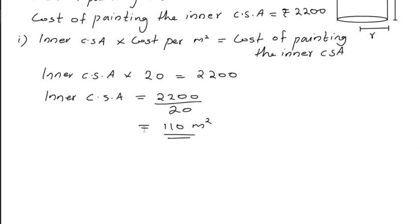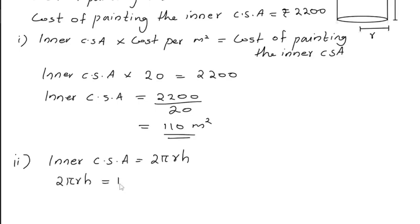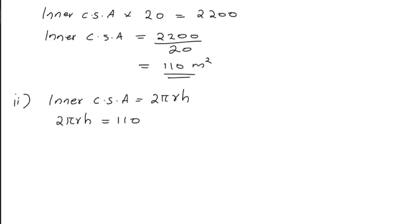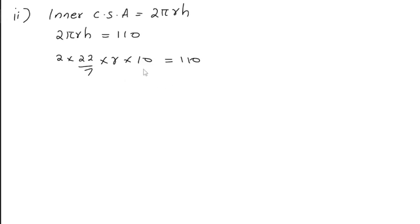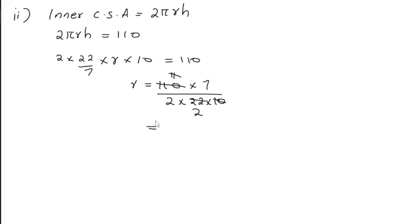Now to find the radius of the base, we use the inner curved surface area formula: 2πRH equals 110. Substituting values: 2 into 22/7 into R into 10 equals 110. So R equals 110 multiplied by 7, divided by 2 into 22 into 10. Cancelling, we get the radius of the base as 7/4 meters, which equals 1.75 meters.